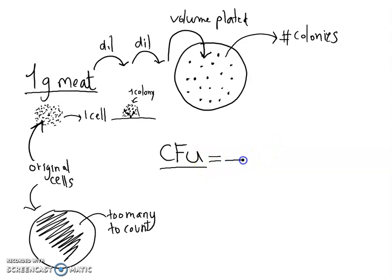There's a particular formula to figure that out. We count the number of colonies that we can see on the plate. Remember, if we plated the original gram there would just be too many, so when we're counting colonies it comes from a dilution.